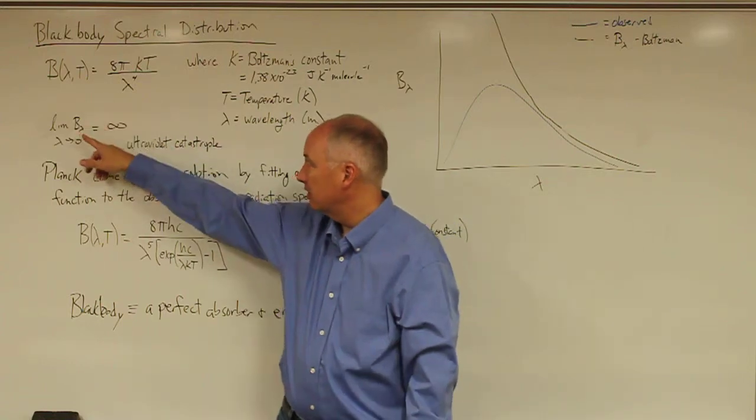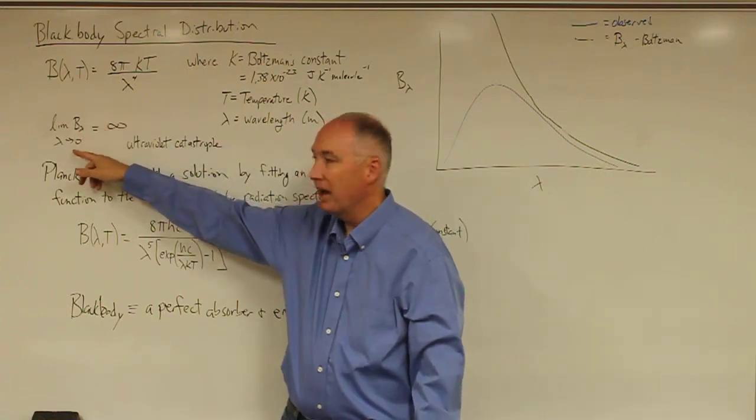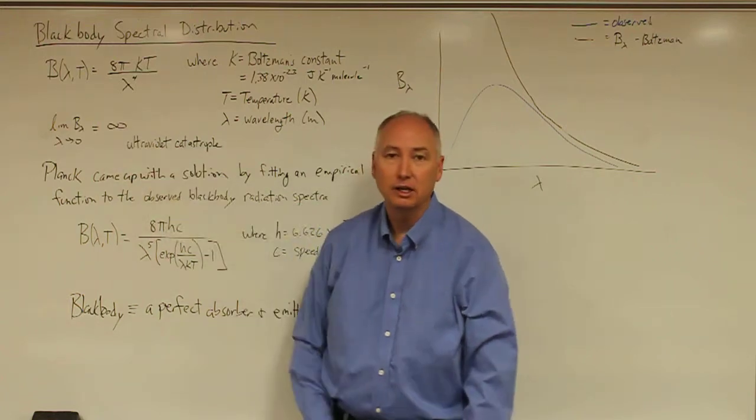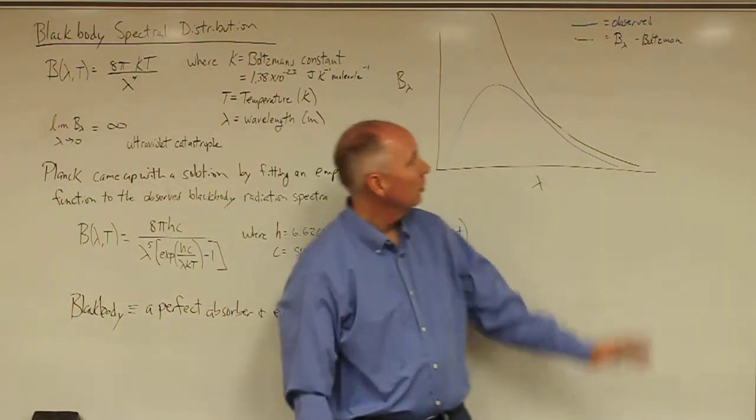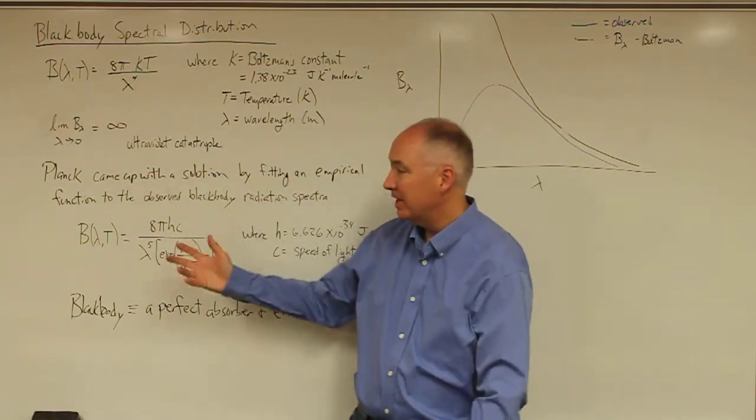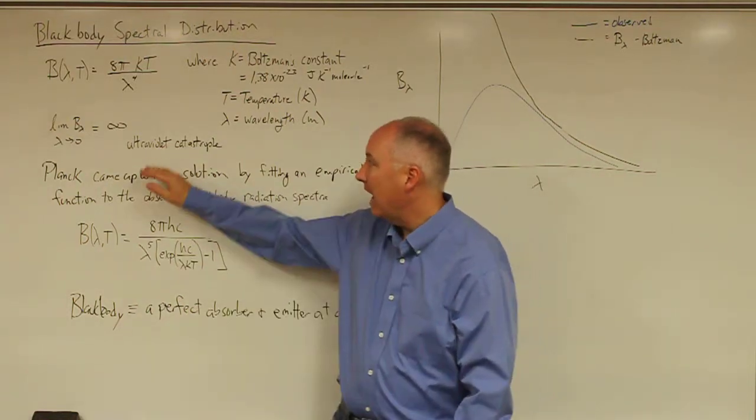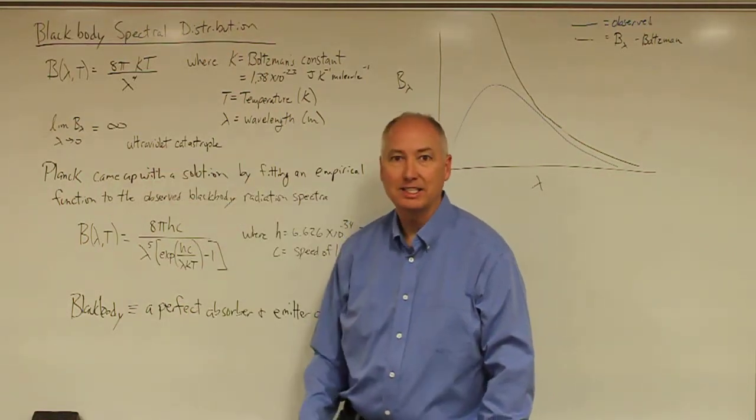the limit of this distribution function, as the wavelength goes to zero, goes to infinity. So that would indicate that there's an infinite amount of energy at those low wavelengths, and we refer to that as the ultraviolet catastrophe.